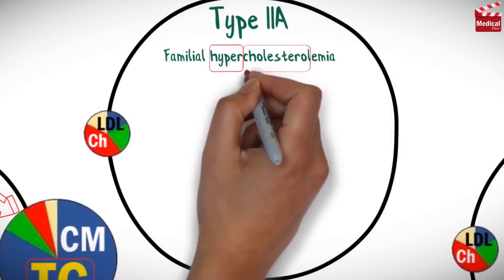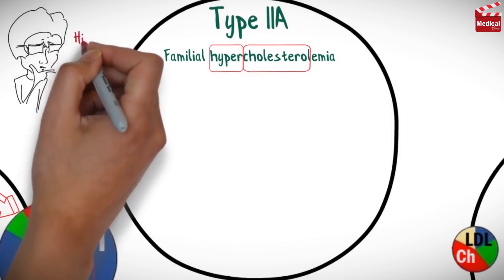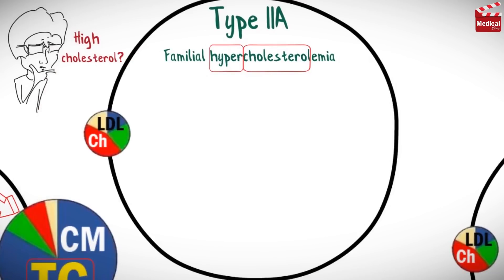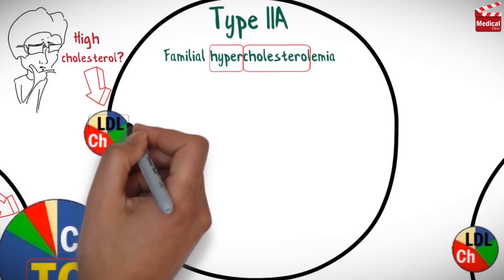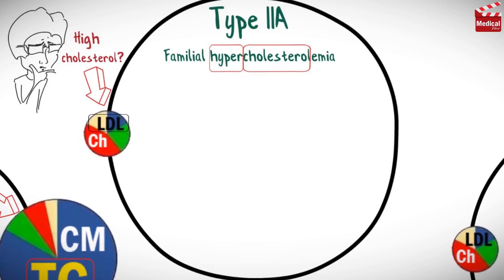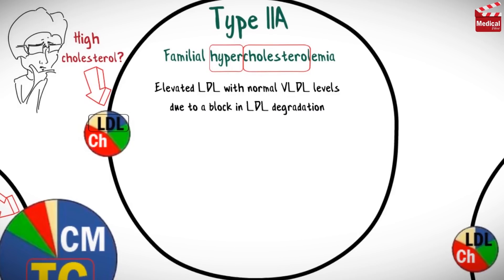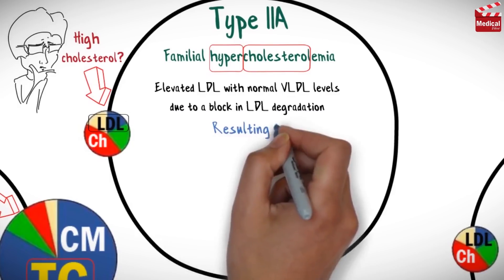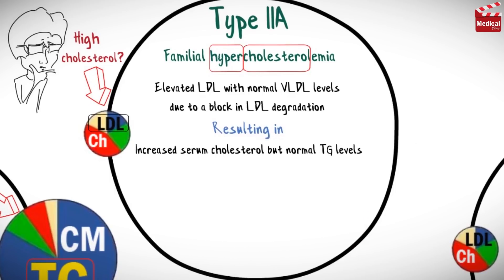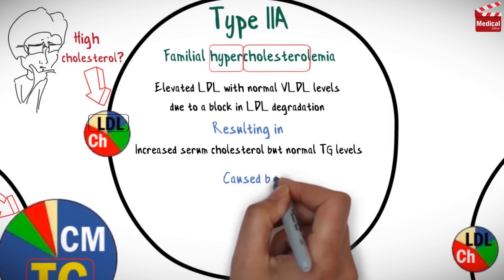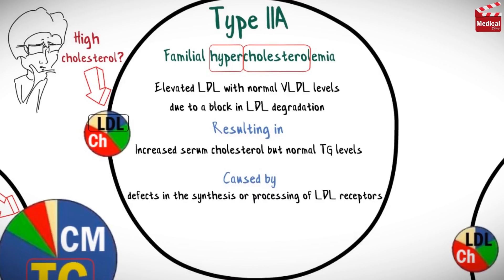Type 2a is familial hypercholesterolemia. In this case, there is a high amount of cholesterol in the blood, and the lipoprotein with the highest amount of cholesterol is LDL. So this type is characterized by elevated LDL with normal VLDL levels, due to a block in LDL degradation. This results in increased serum cholesterol but normal triglyceride levels, caused by defects in the synthesis or processing of LDL receptors. In this condition, cardiovascular disease is greatly accelerated.